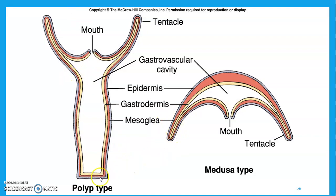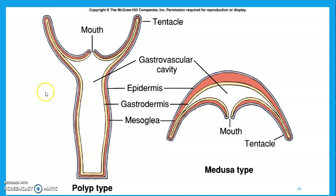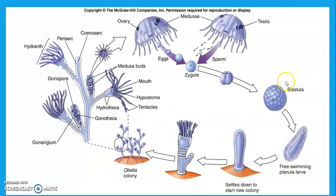They have two main body types: a polyp form and a medusa form. You can think of the sea anemone as the polyp, and then the medusa form looks more like the jellyfish. All of them will live in both of these forms — it just might be in different parts of their life cycle. Sea anemones have this as their main adult body plan, but when they reproduce they will pop off and make tiny little medusa forms. Whereas a jellyfish spends most of its life in the medusa stage, and very little of its life in a polyp stage.